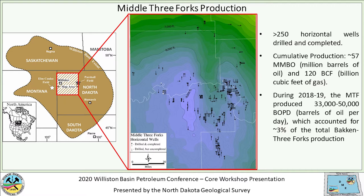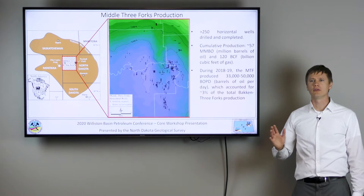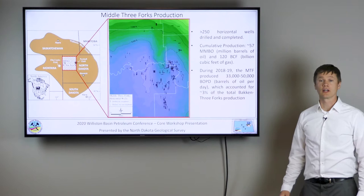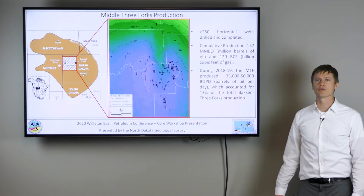Looking specifically at the middle Three Forks in western North Dakota, there have been over 250 horizontal wells drilled and completed. Cumulative production is over 57 million barrels of oil and 120 billion cubic feet of gas. In 2018–2019, the middle Three Forks accounted for about three percent of total Bakken Three Forks production, around 30 to 50,000 barrels per day. The middle Three Forks didn't start producing until about 2014–2015, making it one of the last reservoirs developed in the play, which partly explains its lower overall production.